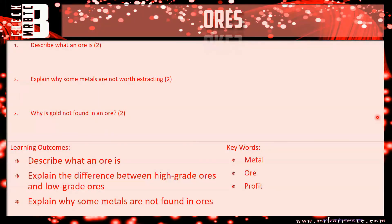Let's see how you've done. The first question: describe what an ore is. Nice and simply, it is a rock that contains a metal. And then for the second mark: that is profitable to extract.